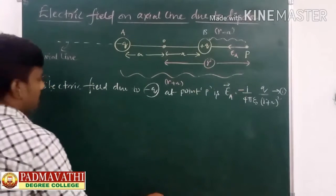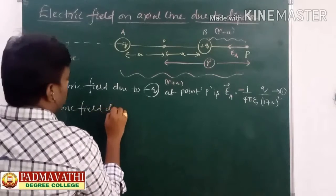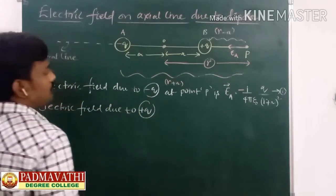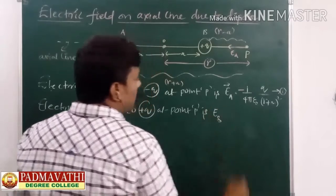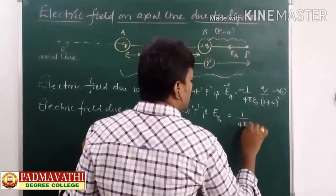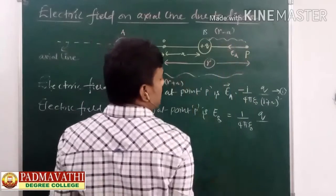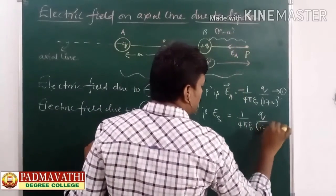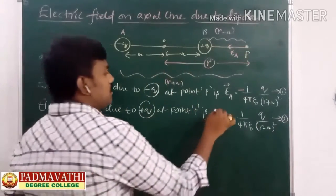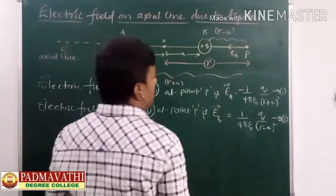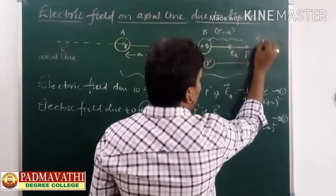Next, the electric field due to the plus Q charge at point P is EB, which equals 1 over 4πε₀ times Q over (R − A)². This is equation 2. The direction of EB is away from the plus Q charge, so EB points in the positive R direction.